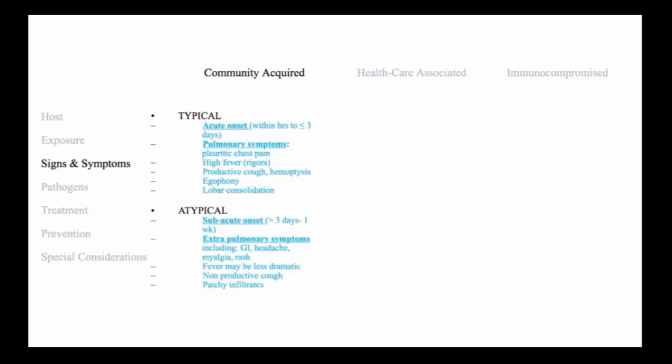The signs and symptoms of community-acquired pneumonia are characterized as typical versus atypical, which are distinguished by the onset of symptoms and the presence of pulmonary versus extrapulmonary symptoms. In the case of typical pneumonia, the onset may be as soon as a few hours to less than three days.